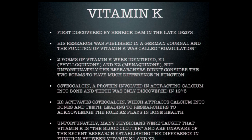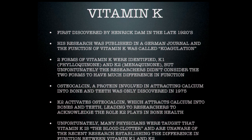Vitamin K was discovered in the 1920s by Henrik Dam. Many physicians were taught it was simply a blood clotter — vitamin K1 is essential for four of the 13 proteins involved in blood clotting, and the research was published in a German journal under the word Coagulation spelled with a K. Both K1 and K2 were discovered, but researchers didn't consider them functionally different. It wasn't until osteocalcin — the protein involved in pulling calcium into bone and directing it — was discovered in 1975 that the specific function of vitamin K2 was fully appreciated.